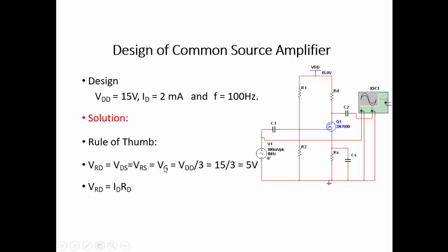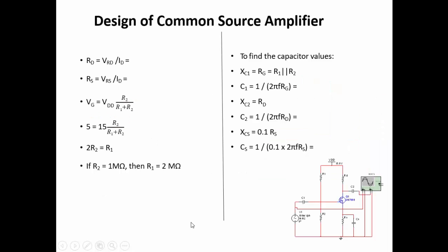As a rule of thumb, we consider the voltage across drain resistance Rd, the voltage between drain to source, and the voltage between source to ground all equal to Vg, which equals VDD divided by 3. Accordingly, all three voltages are found to be 5 volts. Based on the drain current flowing from VDD, we can find the drain resistance value using Vrd.